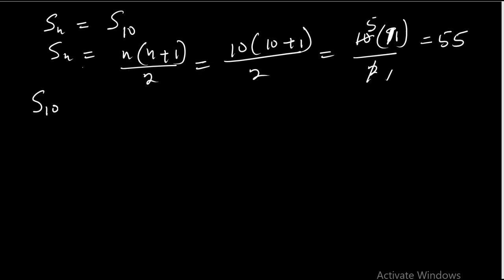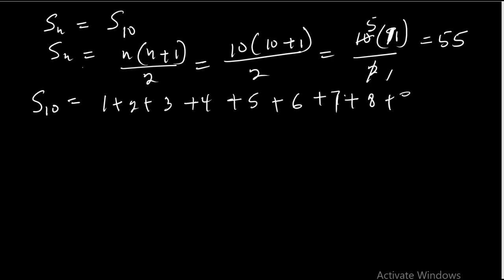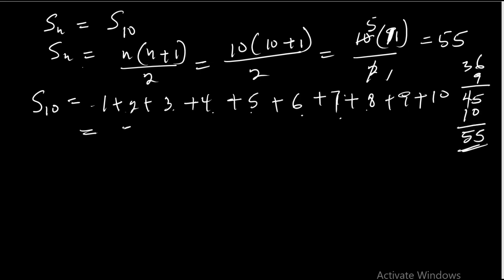Let's verify this practically. S of 10 is 1 plus 2 plus 3 plus 4 plus 5 plus 6 plus 7 plus 8 plus 9 plus 10. If you sum everything: 1 plus 2 is 3, plus 3 is 6, plus 4 is 10, plus 5 is 15, plus 6 is 21, plus 7 is 28, plus 8 is 36, plus 9 is 45, plus 10 is 55. So our formula is correct.